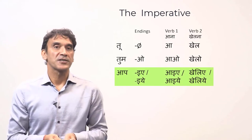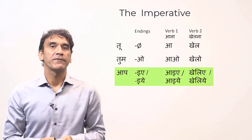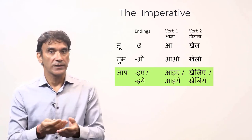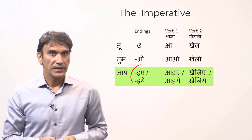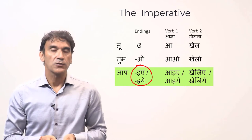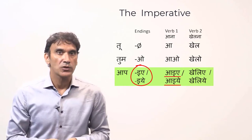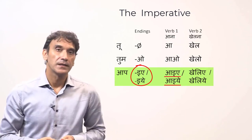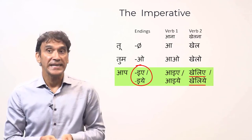'Aap' is the second person plural subject pronoun. It is the most formal and polite way of addressing someone, and students are advised to use it all the time. The ending for 'aap' is '-iye' (or '-iye') — they both sound very similar but the spellings are different. For verb one, the root is 'aa' — simply add the ending '-iye' to the root to make the imperative form 'aaiye' (please come).